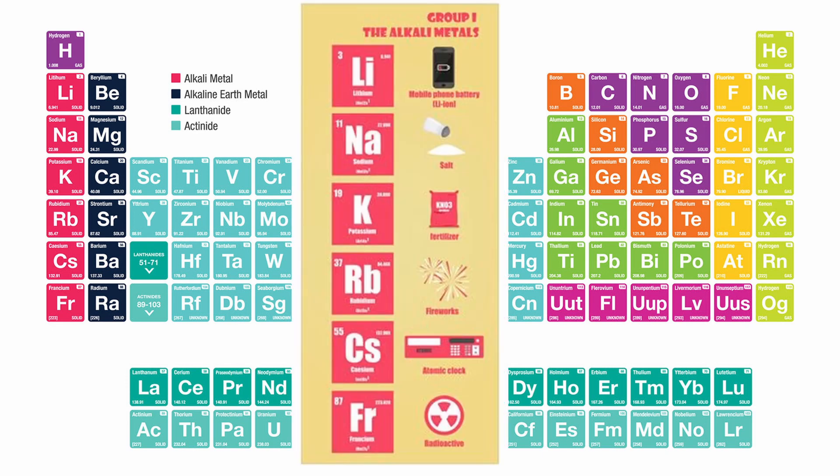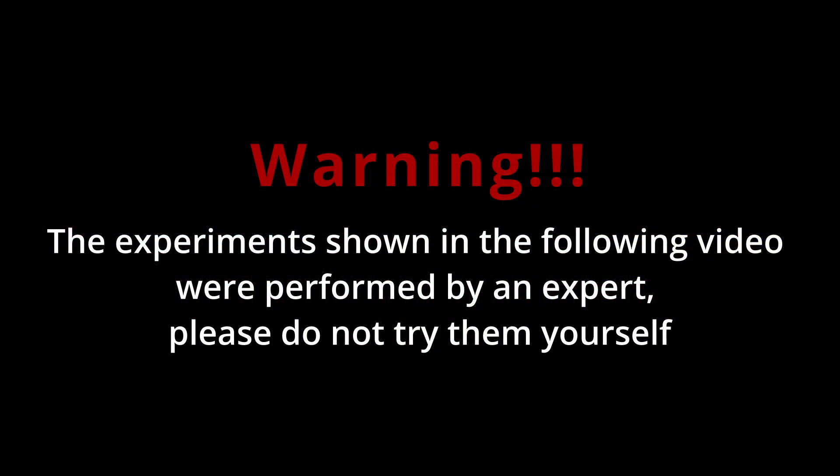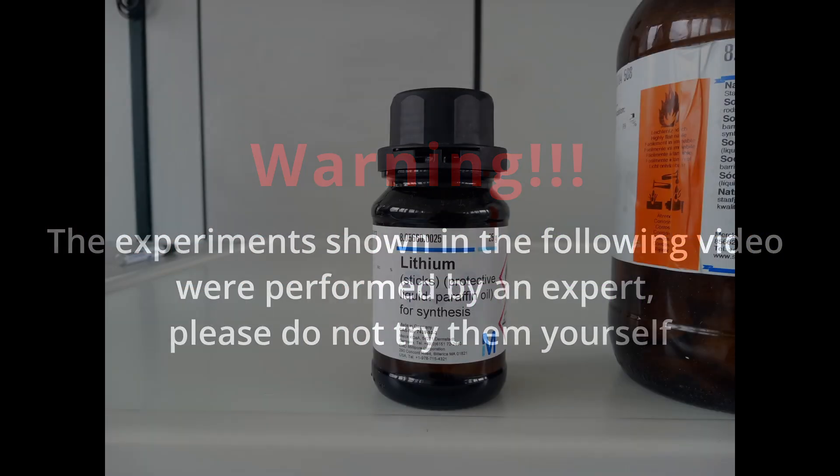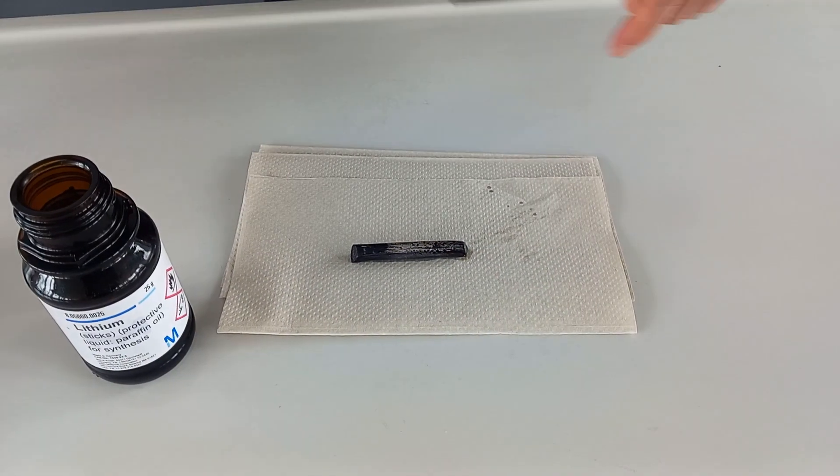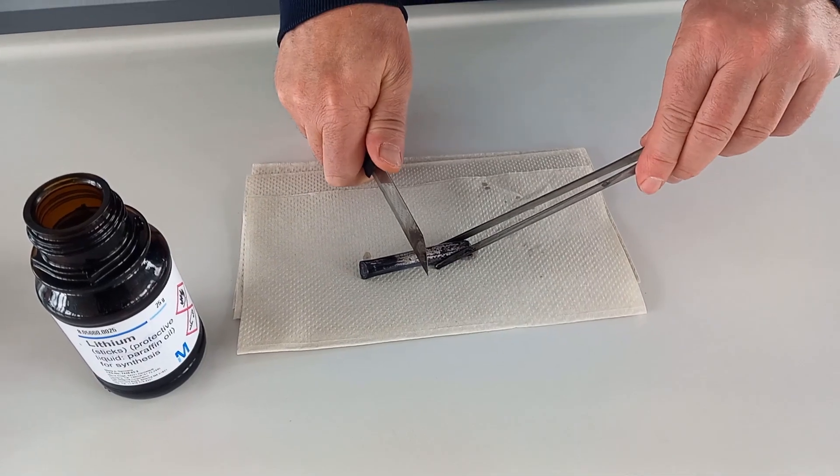Hello everybody, and in this video I'm going to talk about the properties of the alkali metals. So the first alkali metal is lithium. Lithium is a very soft metal, so it can easily be cut with a knife.